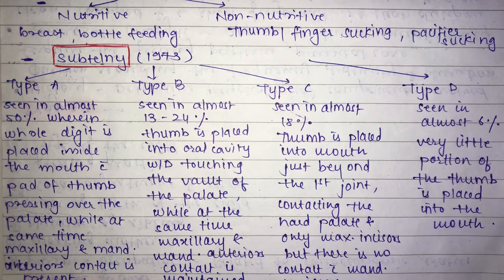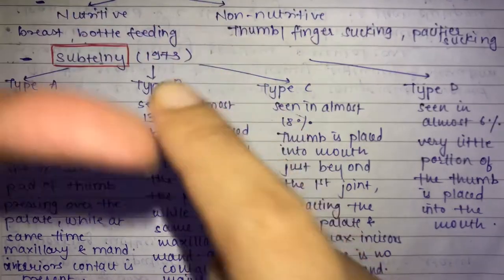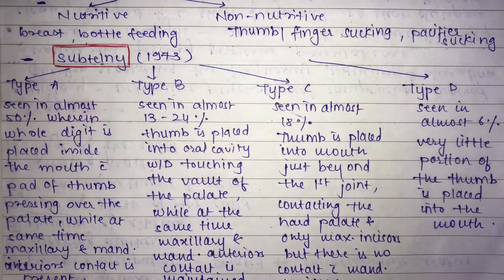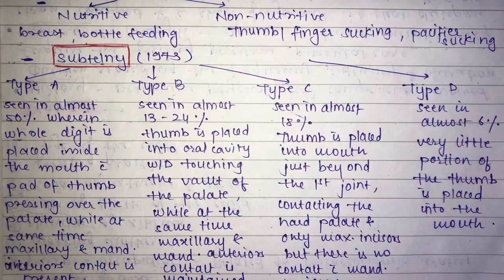An important classification was given by Subtinley in 1973, dividing thumb sucking into four types. Type A, seen in almost 50%, is where the whole digit is placed inside the mouth. The pad of the thumb presses over the palate, causing a high-vaulted palate, while maxillary and mandibular anterior contact is present — meaning both upper and lower front teeth touch the thumb.